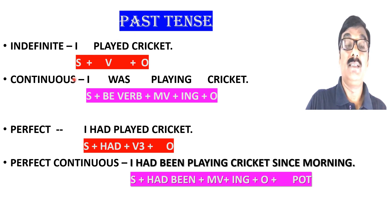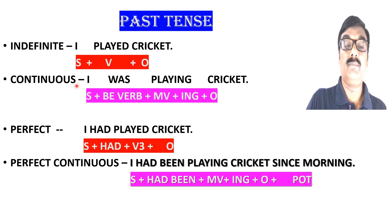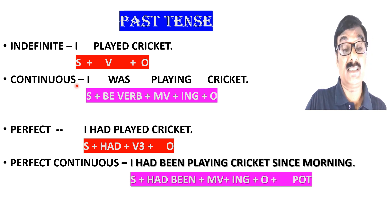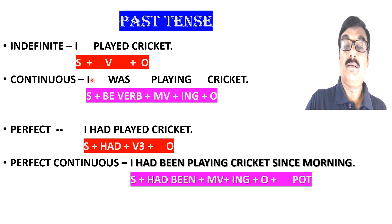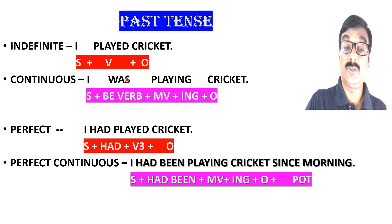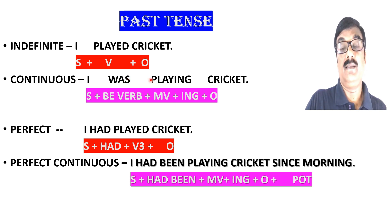Next is past continuous tense. When in the past time some action started and it continued for some time, past continuous tense is used. The structure is: Subject + was/were + main verb + ing + object. 'Was' is used with 'I', and 'were' with others. Example: 'I was playing cricket' — this is past continuous tense.